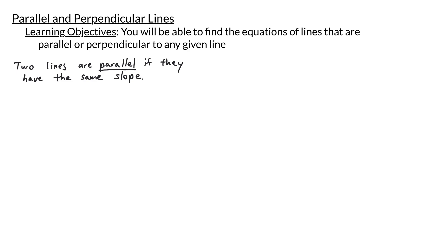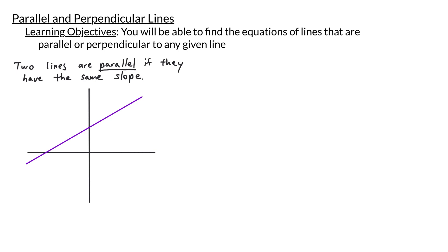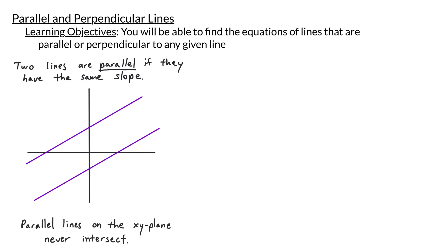Let's take a look at an example of some parallel lines. Remember that the slope of a line tells us how steep a line is. So if I have a parallel line, it would be a line that has the same steepness. Two parallel lines on the xy plane will never intersect because they have the same slope — their ratio of rise and run are the same, so they go over and up at the same rate.